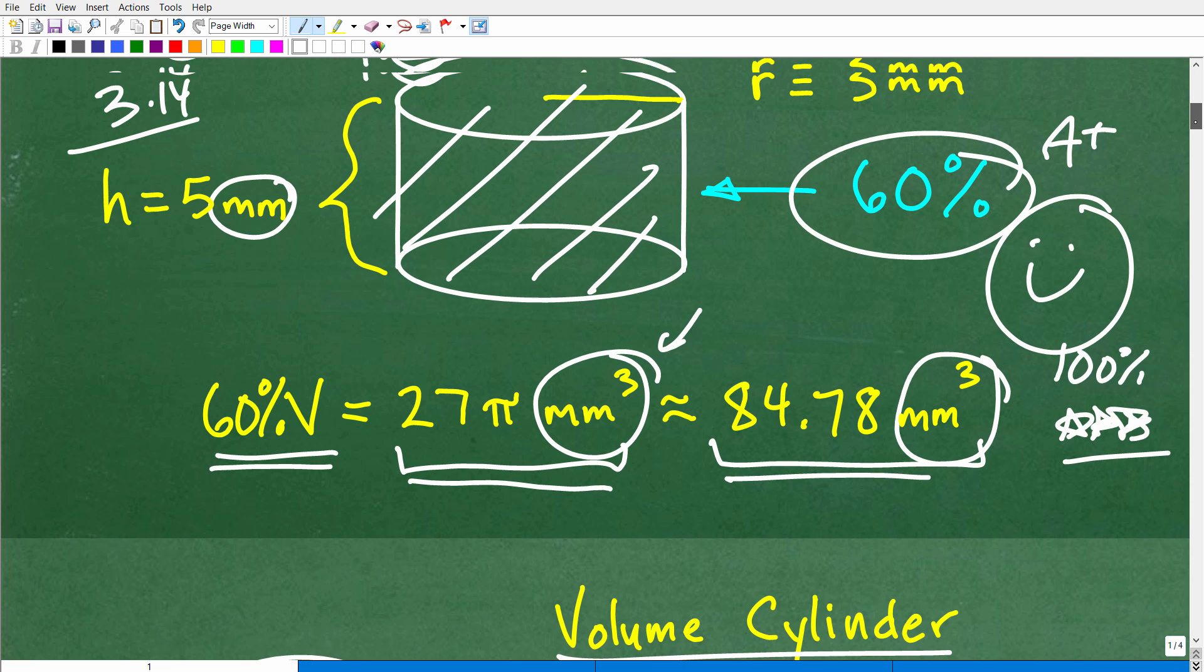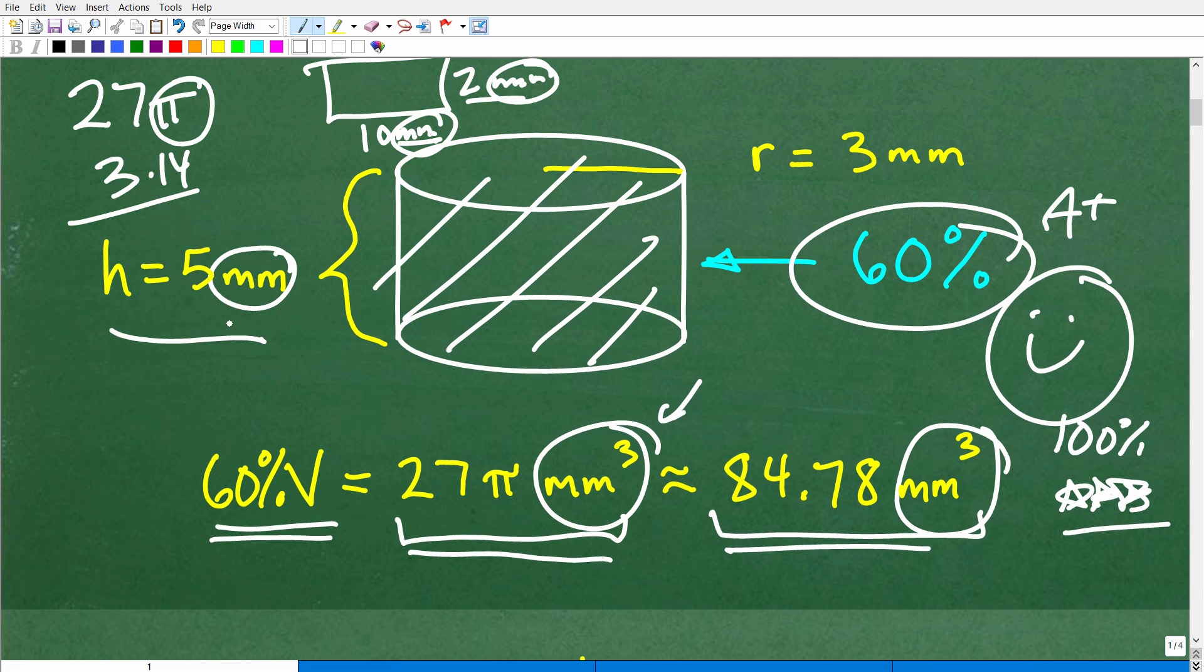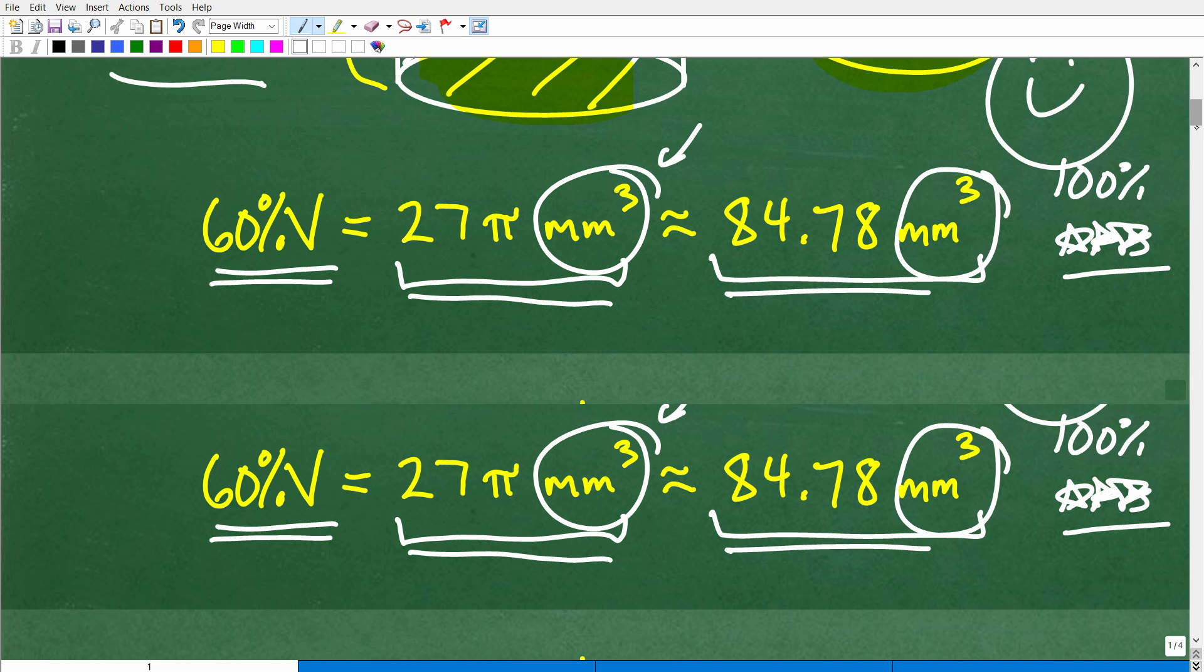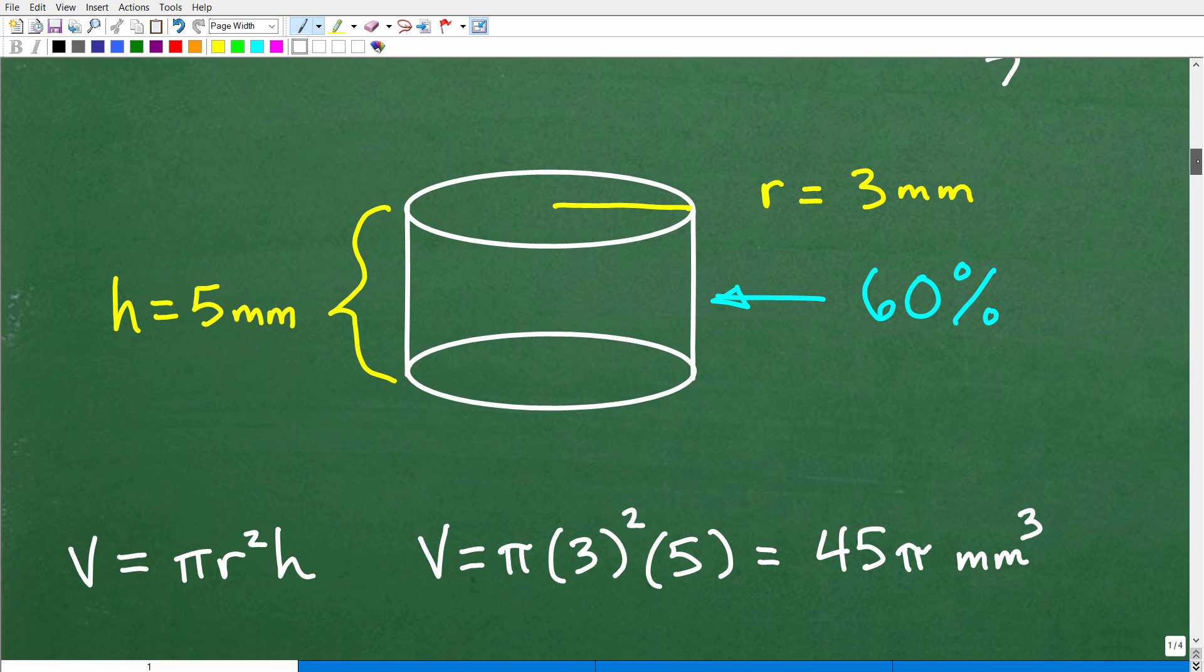Now, if you want to try the problem again, okay, here it is. Here's the height. The height is 5 millimeters. The radius is 3 millimeters. And I want to have 60% of the volume. So what do we need to do? Well, obviously, we need to find the entire volume and then take that number and find 60% of it. So basically, I'm just telling you exactly what to do if you want to try this problem on your own. But let's go ahead and actually do this right now.